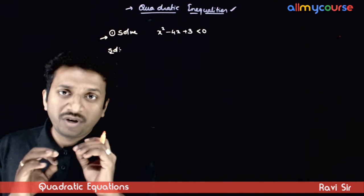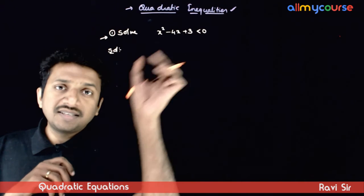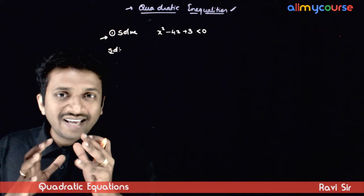Make sure that you make leading coefficient positive before applying this. If a quadratic expression is less than 0, then x lies between the roots.